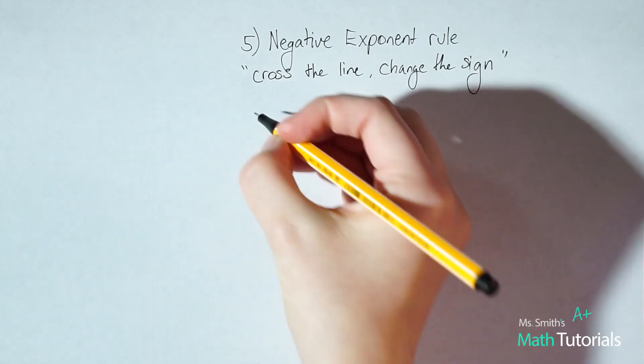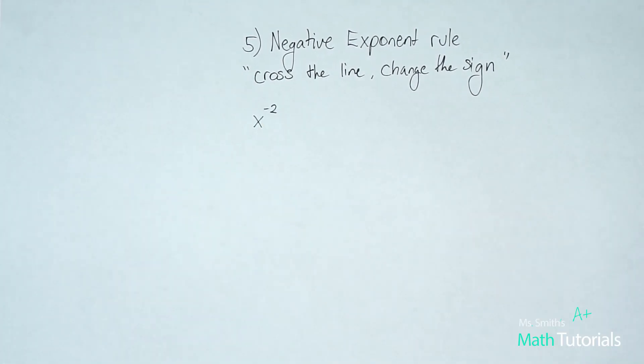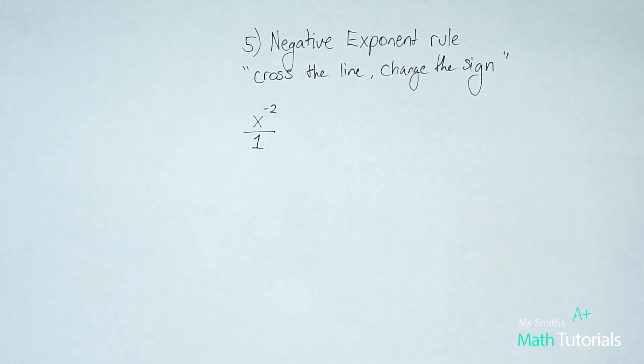So if we were given, let's say, x to the negative two, the first step is always if it's not in a fraction, go ahead and put it in a fraction. So I can turn anything to a fraction by throwing it over one. Just by adding a line and adding a one underneath it, now it's a fraction.